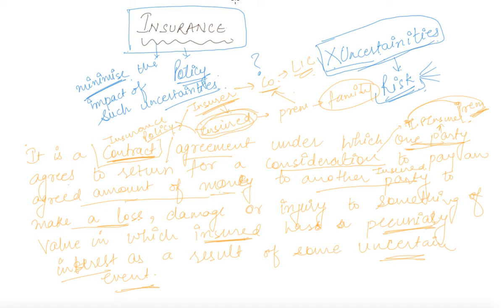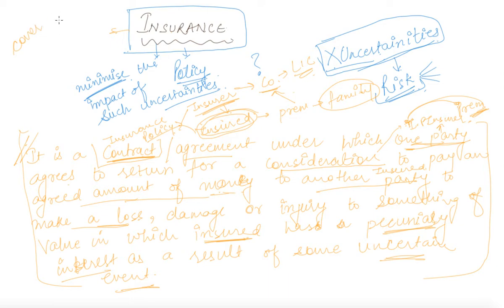Our first class is basically regarding the meaning of insurance. Hope you got the concept and this definition is now clear to you so you can easily learn it. Even though there are many definitions given regarding insurance in books, this definition is complete. In simple words, we can also say that insurance is a cover over uncertainties.